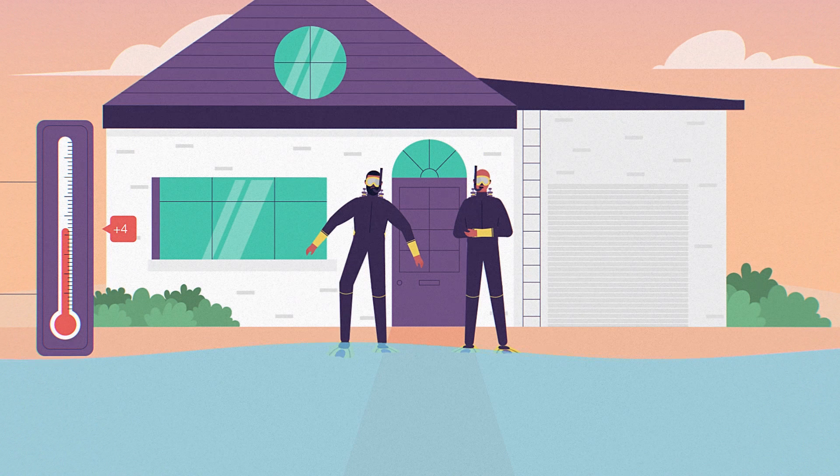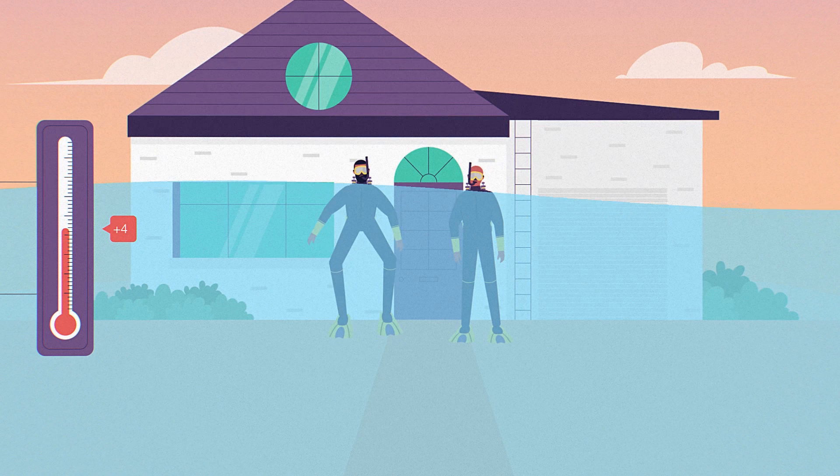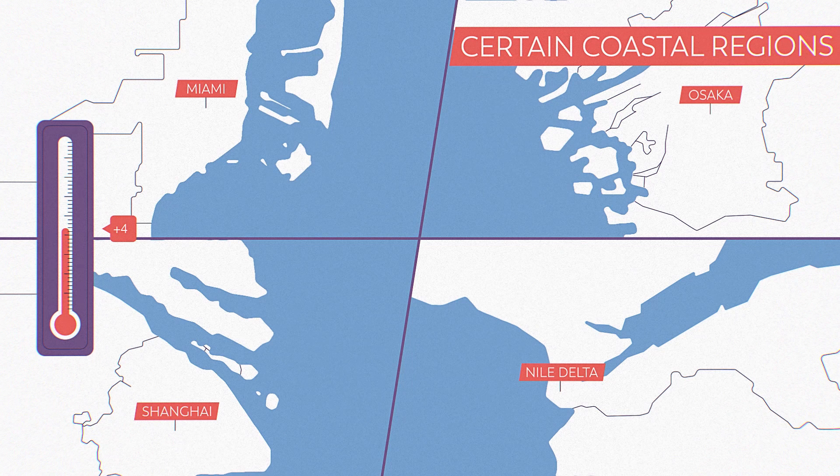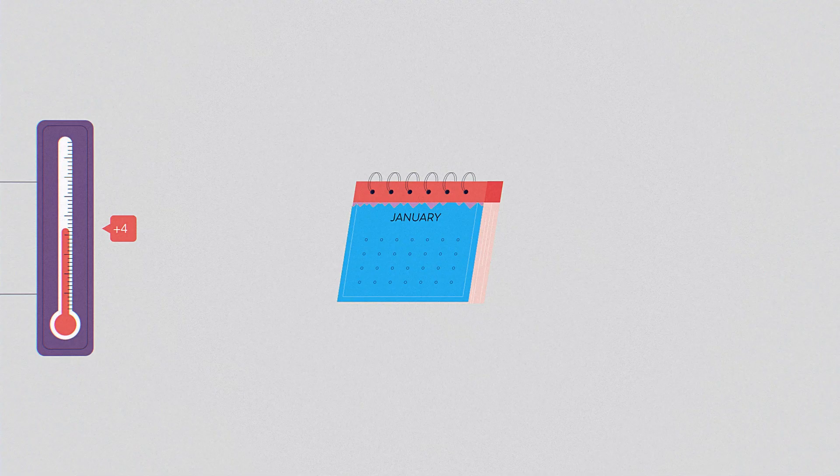At plus 4, sea levels could rise about 6 and a half feet, nearly the height of most doorways, taller than celebrities like Dwayne The Rock Johnson and James Harden, and more than high enough to drown much of Miami, Shanghai, Osaka, and Egypt's Nile Delta.